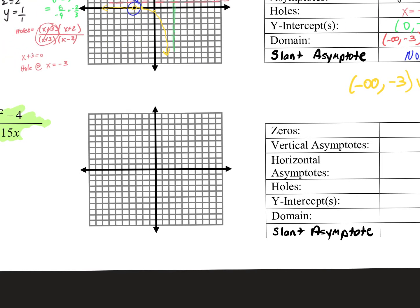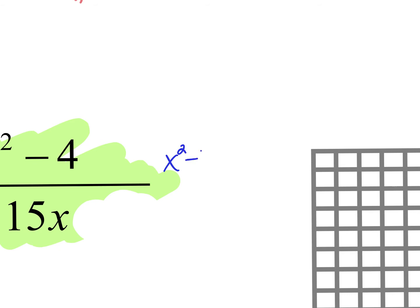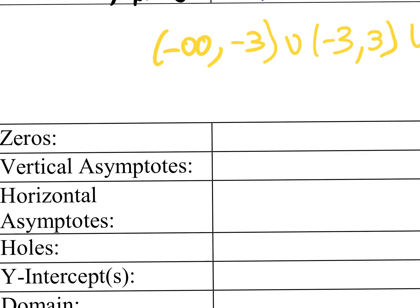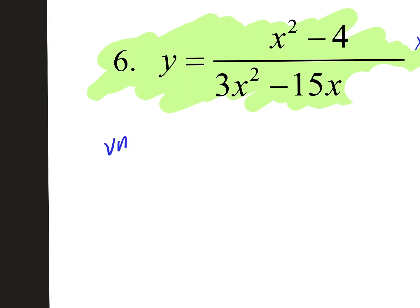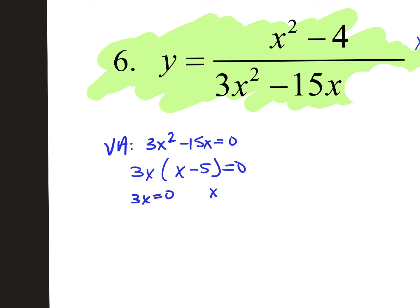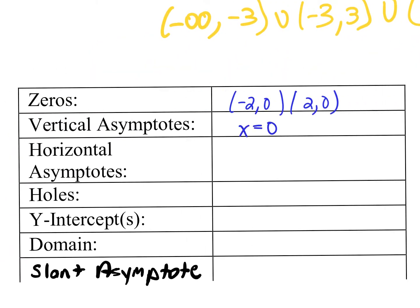Let's go to number three — go through quickly. How do you find the x-intercepts? Set the numerator equal to zero: x squared minus 4 equals zero, so x squared equals 4, x equals plus or minus 2. My x-intercepts are at negative 2 comma 0 and positive 2 comma 0. For vertical asymptotes, set the denominator equal to zero: 3x squared minus 15x equals zero. Take out the GCF of 3x, leaving x minus 5 equals zero. So vertical asymptotes at x equals 0 and x equals 5.